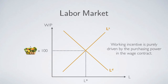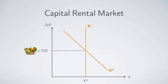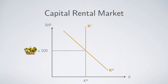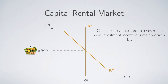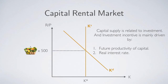Moving to the capital rental market: capital demand is related to productivity, which has nothing to do with money, so it will not change. Capital supply in the short run is fixed and not changed by money. Even in the long run, capital supply is related to investment, which is driven by capital productivity and the real interest rate — neither of which has anything to do with money. So no matter how much money the government prints, it will not affect capital supply, and the capital rental market equilibrium stays the same.